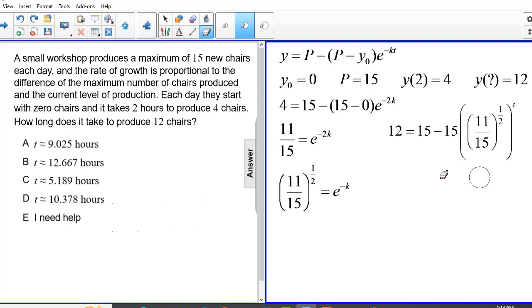So we do some basic algebra to get to this step here. 1 fifth is equal to 11 15ths raised to t over 2 power.